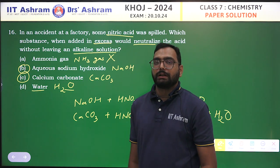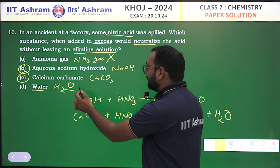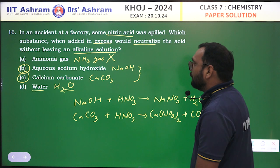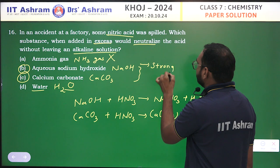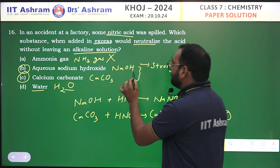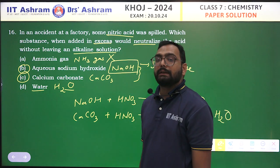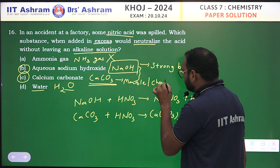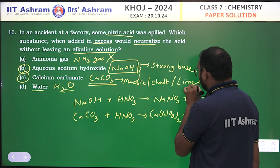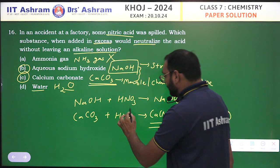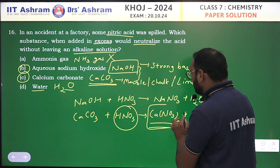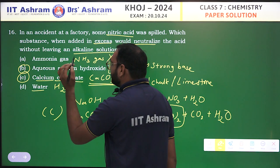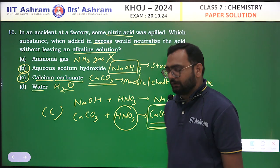Water will only dilute but still leave the acid, so there will still be some harmful effect. Now between NaOH and CaCO₃, NaOH is a strong base and can cause harm as strong bases are corrosive in nature. But CaCO₃ is a salt — its common forms are marble, chalk powder, and limestone. If we use CaCO₃, the acid gets neutralized and the remaining product causes no harm to us. So option C, calcium carbonate, is the better choice and the correct answer.